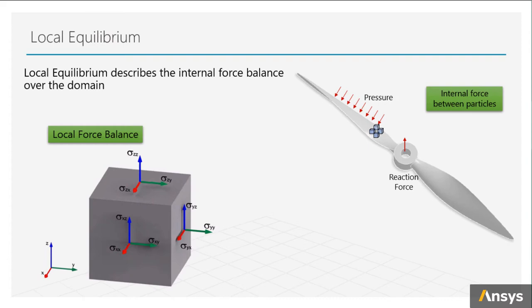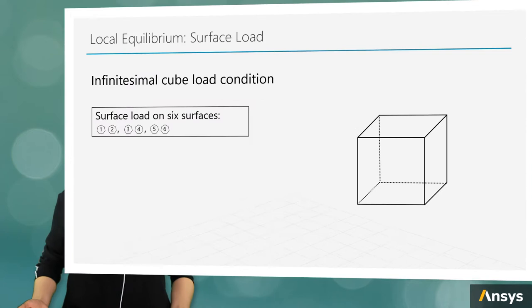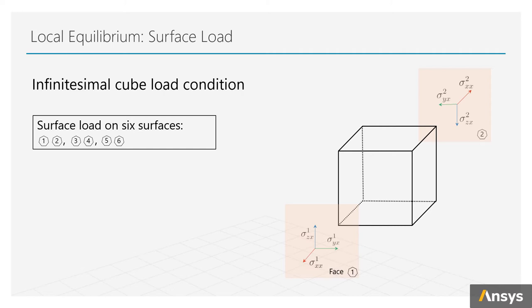The local equilibrium is derived from the internal force balance on the infinitesimal cube. Let's have a look at the load condition on the infinitesimal cube. There are six surfaces on the cube. We denote stresses on different surfaces by the surface ID 1-2-6. On each surface, we can find forces by multiplying the stress components by the surface area.